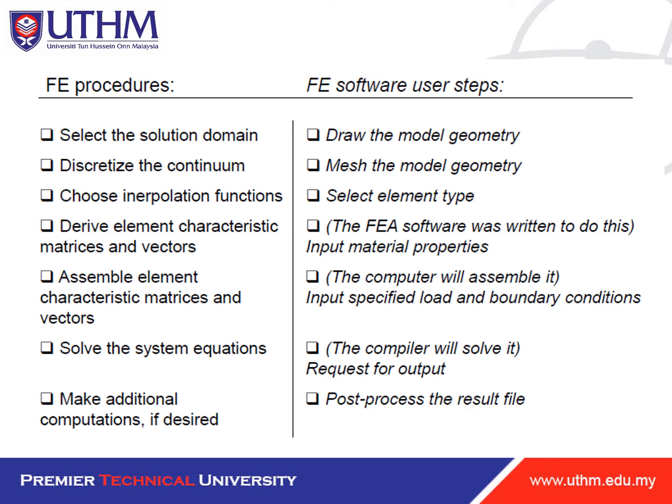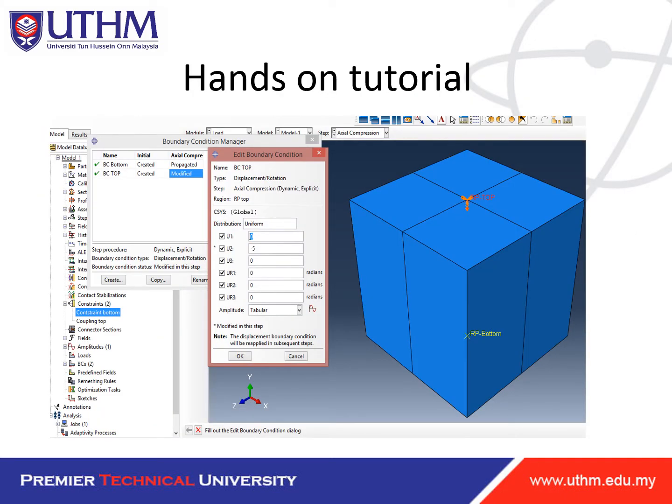For the software user steps: you draw the model geometry, mesh the model geometry, select element types (linear or nonlinear), input material properties (the software assembles it), specify load and boundary conditions (the compiler solves it when you run), request output, and post-process the results to extract them.